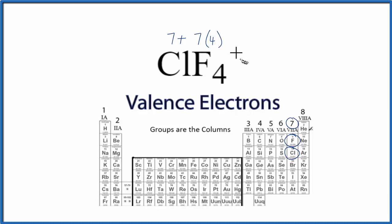And then this positive sign means we've lost an electron. Electrons are negative, so if you lose a negative charge, you become positive. So we need to remove 1 electron from here. That'll give us a total of 28 plus 7, that's 35, minus 1, 34 valence electrons for the ClF4 plus Lewis structure.